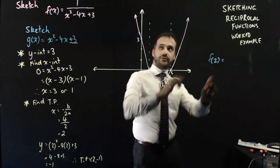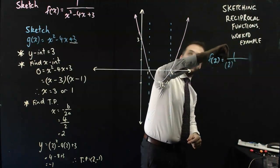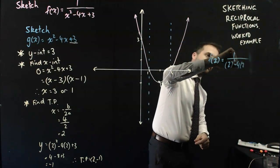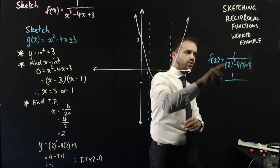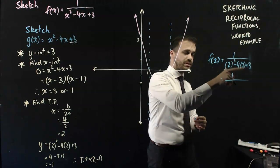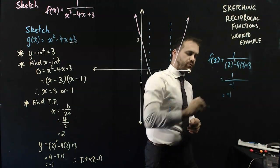So a little bit of working. f(2) equals 1 on 2² - 4 times 2 + 3. That's going to be 1 over 4 minus 8, which is minus 4, plus 3, minus 1. 1 over minus 1, negative 1.